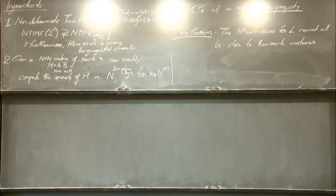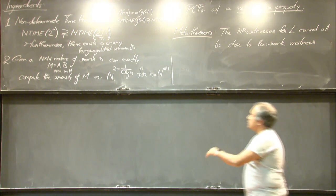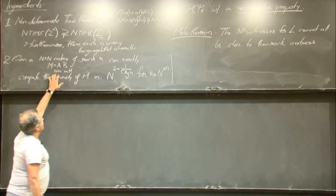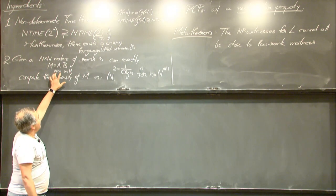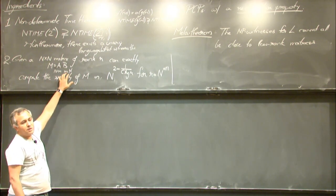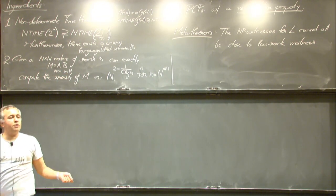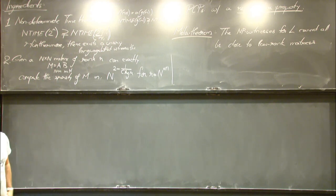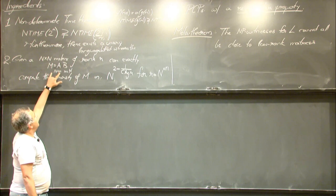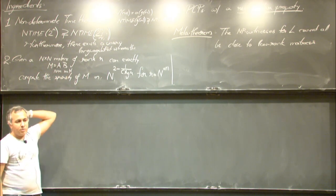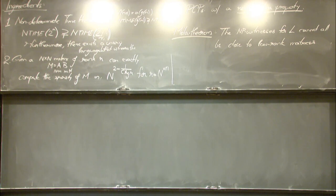Sparsity is just the number of ones in the matrix. Given the low-rank decomposition — r vectors on each side — computing sparsity reduces to the orthogonal vectors problem: you're given two sets of n vectors each of length r and asked how many pairs are orthogonal to each other.